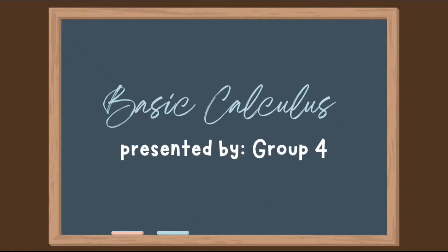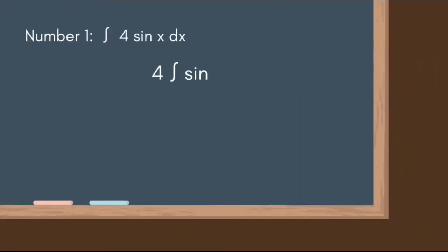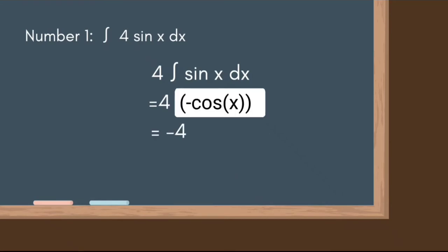Today we're going to integrate the following equations. Number one is the integral of 4sin(x)dx. First, we move out 4 using the property of integrals, giving us 4 times the integral of sin(x)dx. We evaluate the integral of sin(x)dx as negative cos(x), so we get 4 times negative cos(x). Simplifying and adding the constant gives us negative 4cos(x) + C.